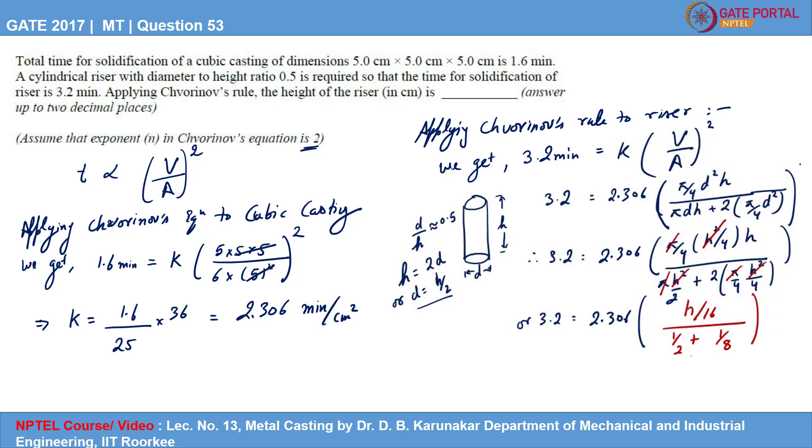There is a square also on the outside. Now you can further simplify this. It can be written as 3.2, 2.306, H by 16, 10 by 16 square. So 16 can be taken care of there. So it will be 2.306 into H square by 100. So from here you can determine the value of H.